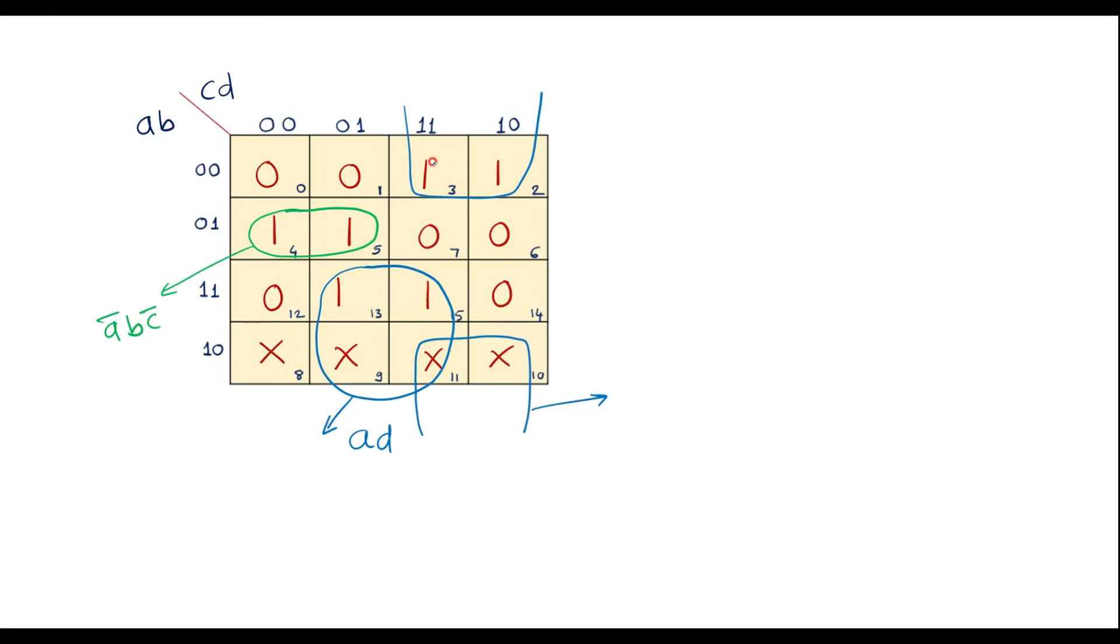Here its value is, it covers these two columns. Common factor is 1, 1 with respect to c and it also covers 0, 0 and 1, 0 row. Common factor is b which is with respect to b bar. It is b bar c.